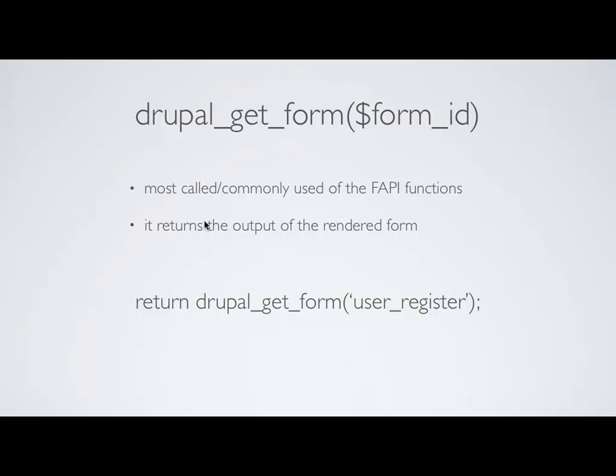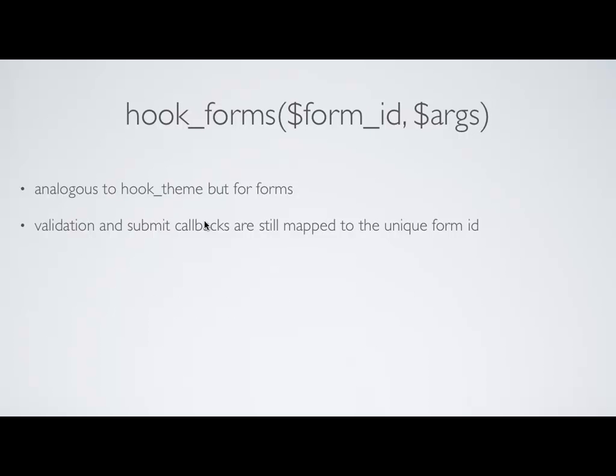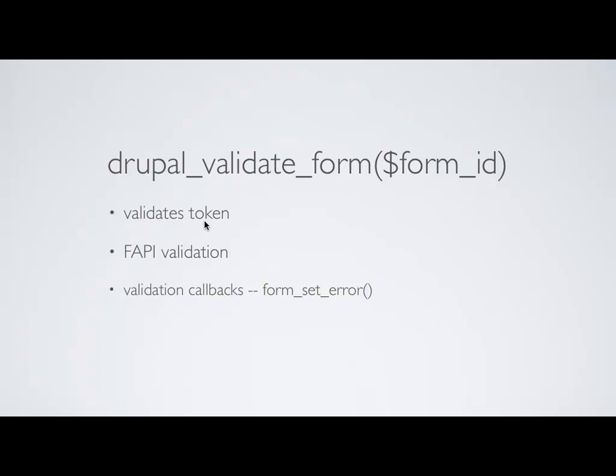`drupal_get_form` is really the workhorse of all of this. In order to get a form to display on the page, you just pass it the form ID — `drupal_get_form('user_register')` — and that will render all elements belonging to that form. It will also look in the module to see if there's a hook_form function defined for that form ID. Hook_forms is analogous to hook_theme — just as you can define custom theme functions, you can define your own form functions.